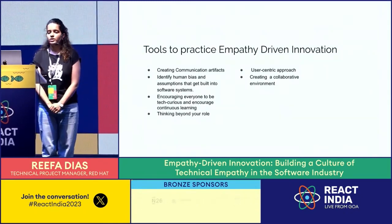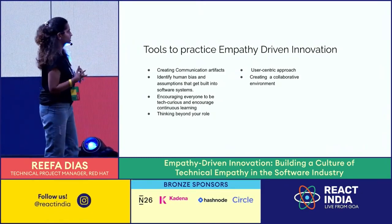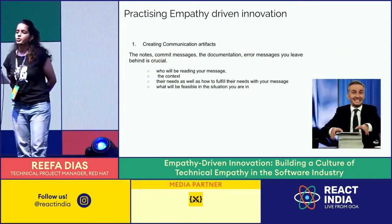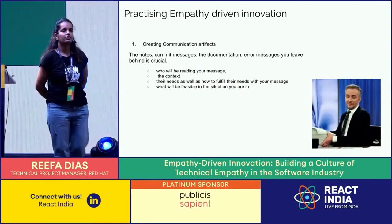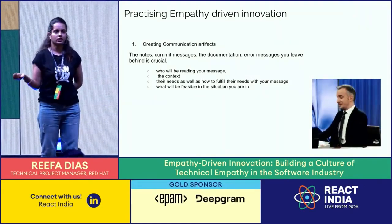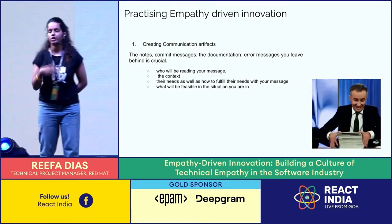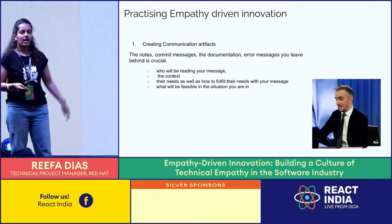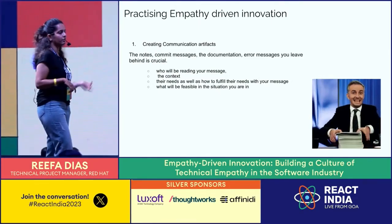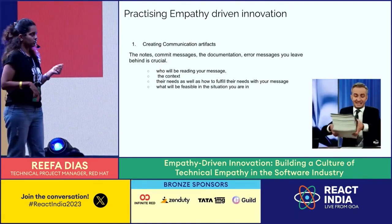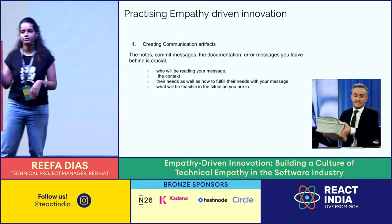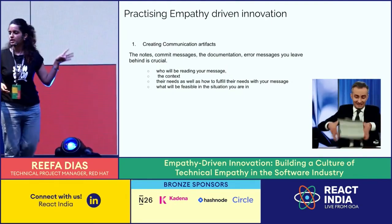These are some of the tools I'm going to talk about - six things we need to practice. The first tool is creating communication artifacts. When you code, these are the notes you leave behind: commit messages, documentation, coding best practice documentation, API documentation, or providing context for why you made a particular decision. It's crucial. Whenever you write a message, think of these four things: who are you leaving the message for, the context of why you are leaving it, what exactly the message says and how it needs to be fulfilled, and what is feasible given your current position. These four things will help you draft better messages.